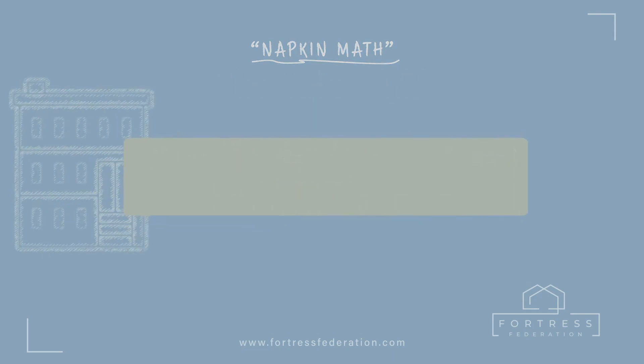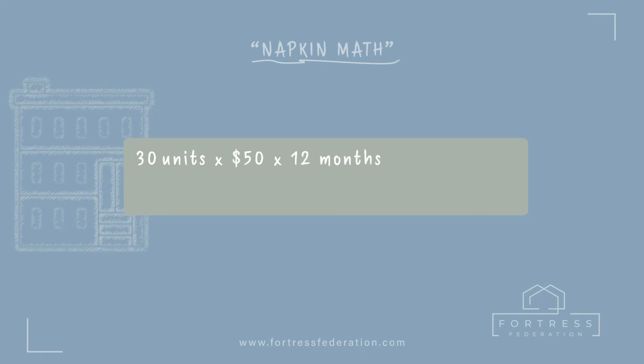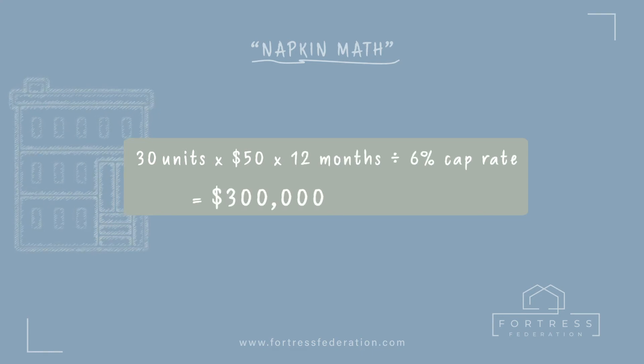So in our scenario, 30 units times the $50 rent increase times 12 months, divided by the 6% cap rate, equals $300,000 in value added.